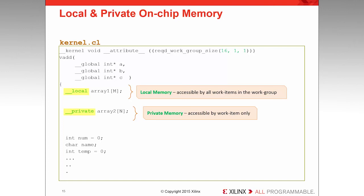In addition to local and private memories, kernel code can define regular variables. Regular variables are stored inside registers in the compute unit, and STXL automatically instantiates as many physical registers per variable as needed to maximize compute unit throughput.